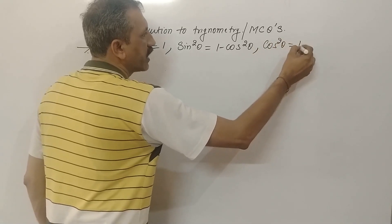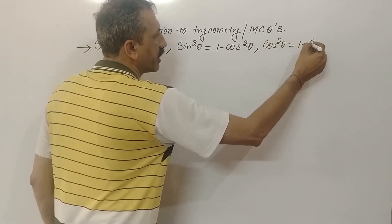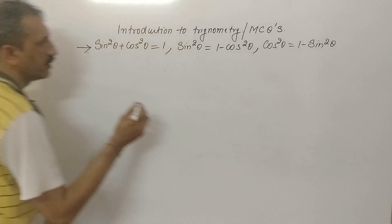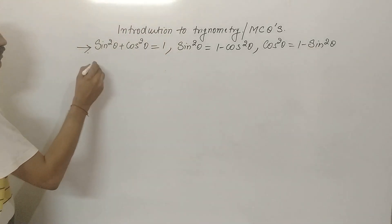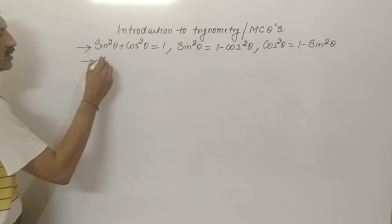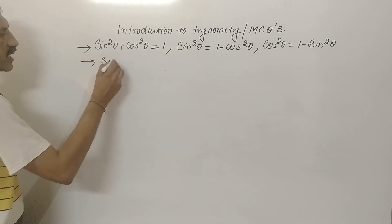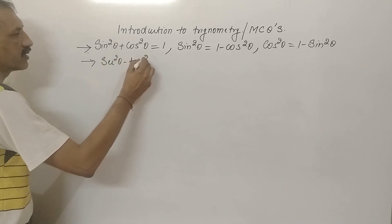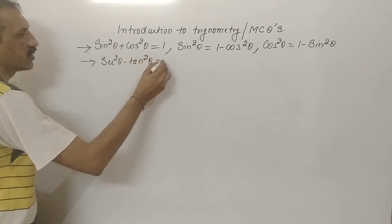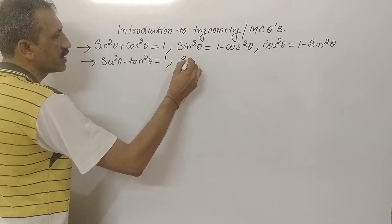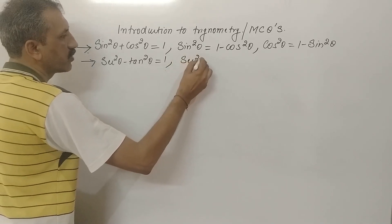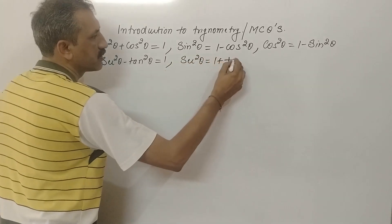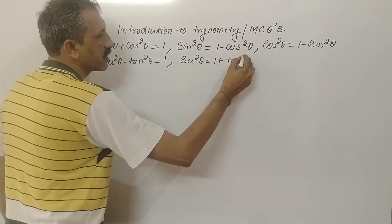In calculation we will have time, but in multiple choice questions, time is a very big issue. The second formula is secant square theta minus tan square theta is equal to 1.